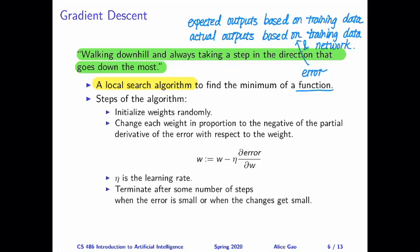Let's talk about the steps of the algorithm. So first of all, we have a neural network, we have a lot of weights, we are going to initialize the weights randomly. Next, we're going to figure out how to update the weights.